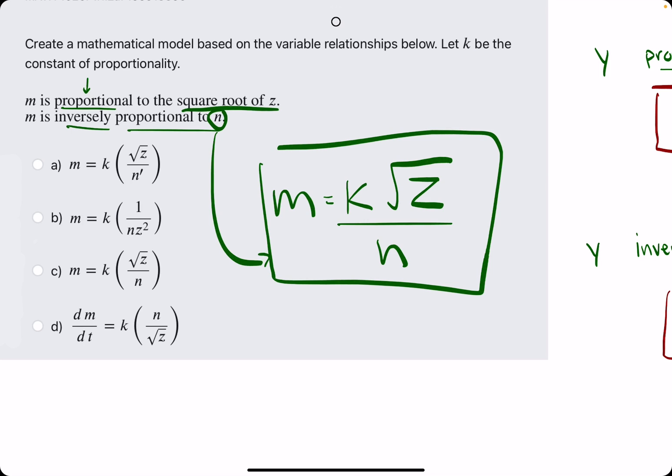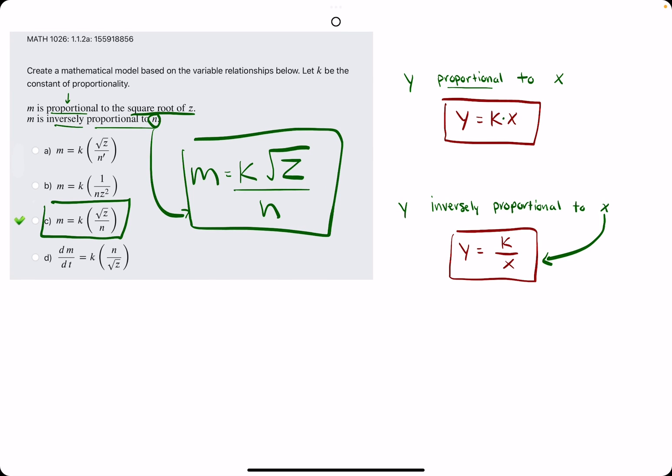So we have m is equal to k times the square root of z over n. And it looks like our best choice is option c. So we break out the eraser. We see that c is our answer.